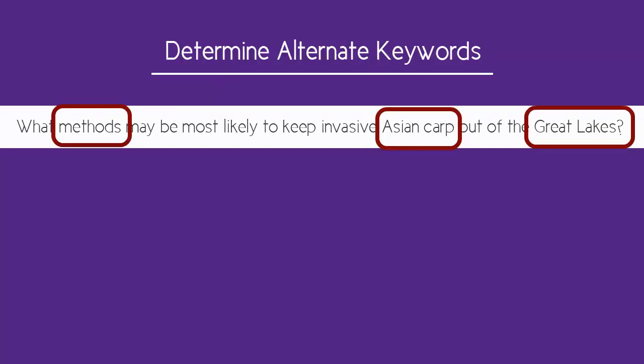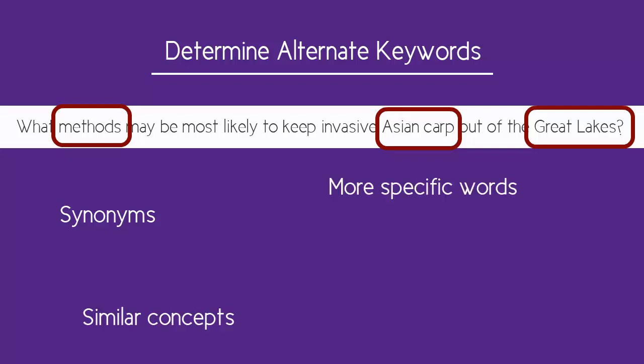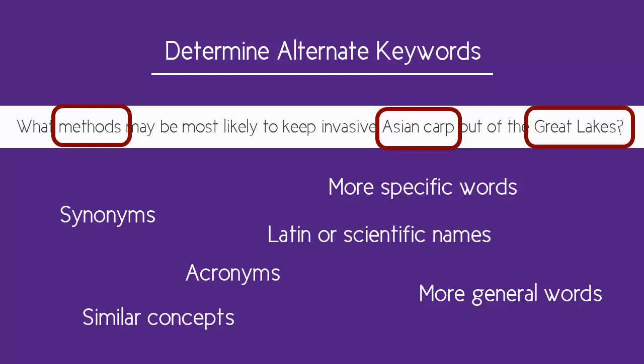After identifying your main concepts, you should come up with alternative terms or keywords. Having a variety of keywords on hand makes it easier for you to revise your search if you aren't getting relevant results. These alternative words might be synonyms, similar concepts, words that are more specific or more general, or acronyms. In life sciences research, it's often important to search the Latin names of organisms as well as their common names.